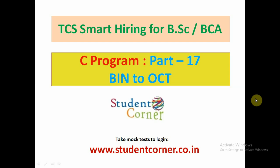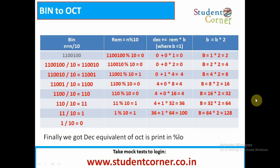Coming to the program, our goal is to convert binary to octal. We cannot directly convert binary to octal, so what we are doing is first converting binary to decimal, and then we need to print using the %o format specifier to print the equivalent octal number.